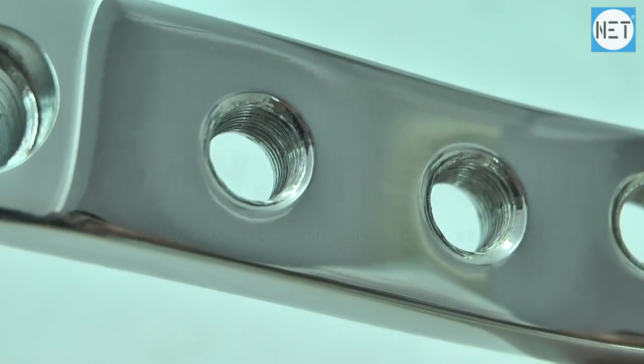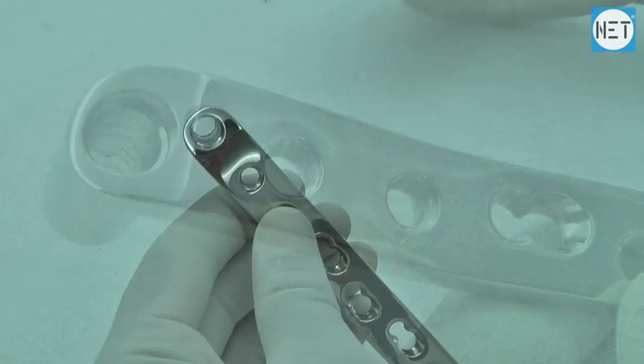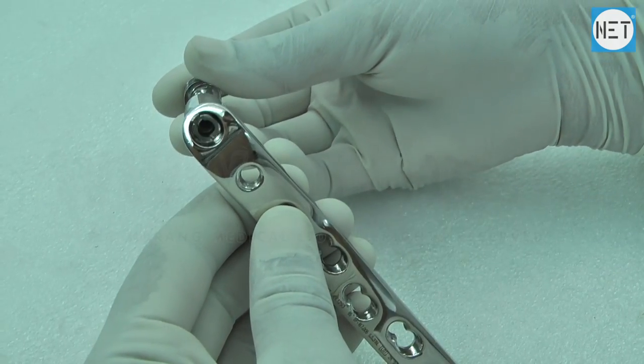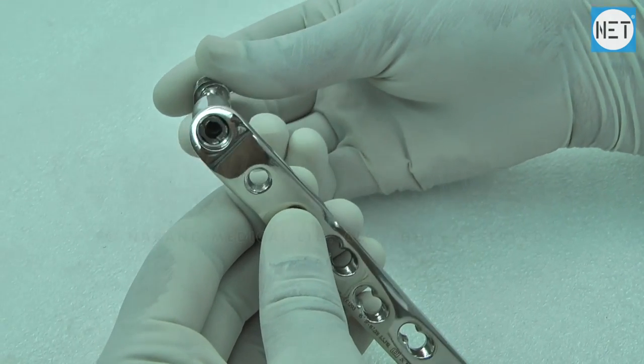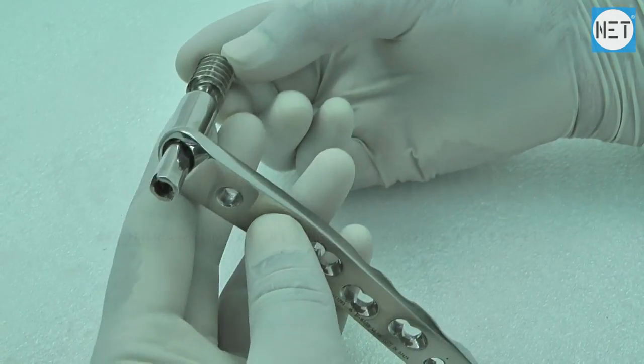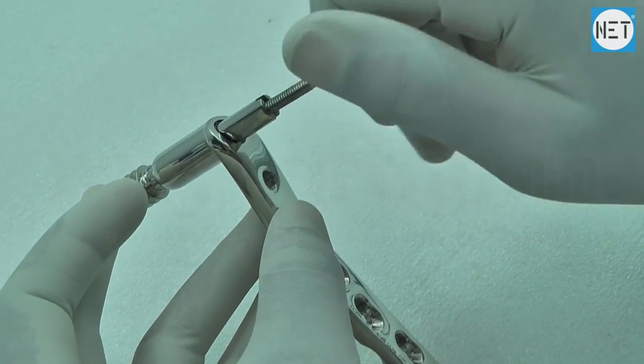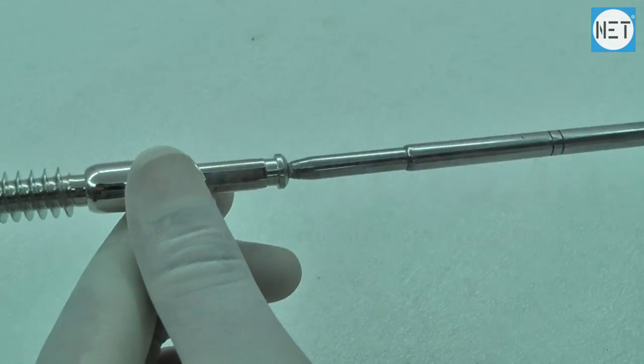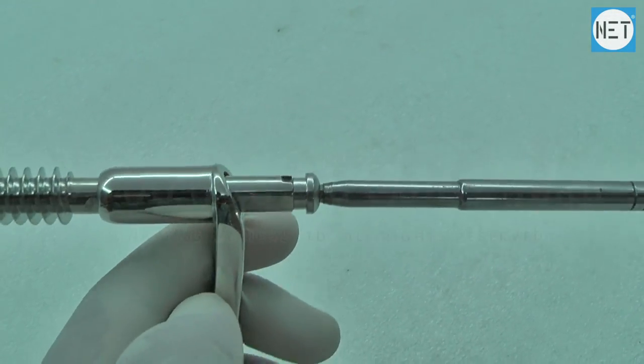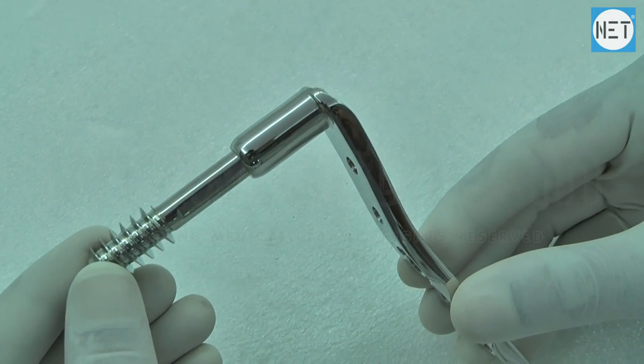These plates are used in conjunction with THS screws and the fixation is facilitated with 4.5mm cortical and 5mm locking screws. The safety locking feature provides angular stability.